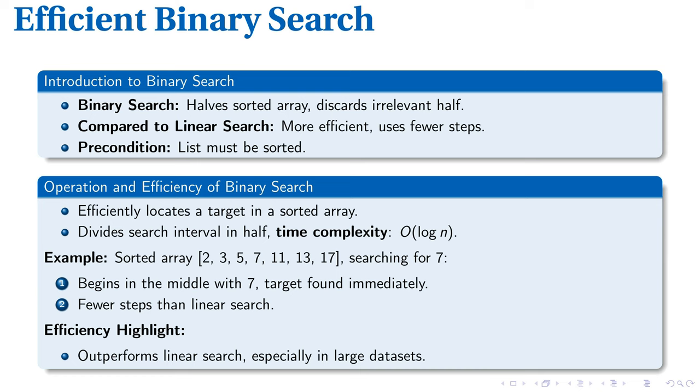Imagine having an all-knowing phonebook. A search for Smith wouldn't start at Aaron. This phonebook dives straight into the S section, halving its workload. This exemplifies binary search, an algorithm that repeatedly divides a sorted list and discards the irrelevant half. Remember, for binary search to function effectively, the dataset must be sorted. Now let's dissect its operational efficiency.